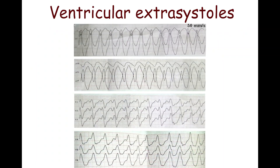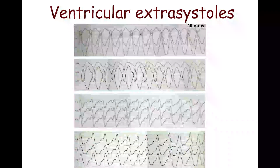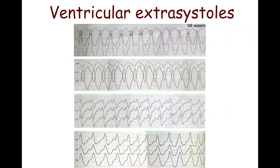Ventricular tachycardia with hemodynamic compromise is an emergent condition that requires electrical cardioversion. Pulseless ventricular tachycardia requires defibrillation as soon as possible and is managed according to cardiac arrest algorithms.